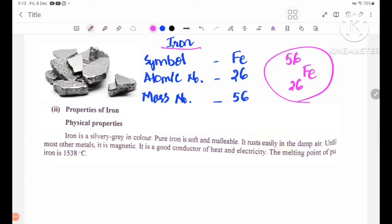Iron: Symbol Fe, atomic number 26, mass number 56. Isotope notation is 26 Fe 56.